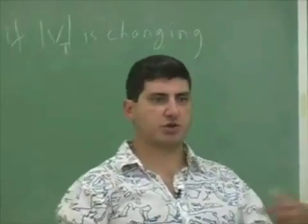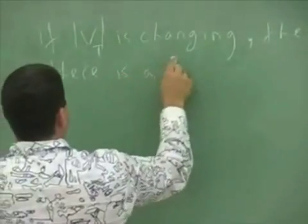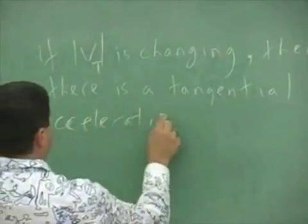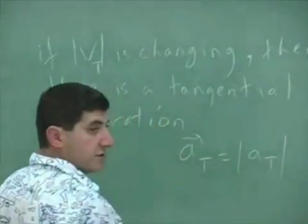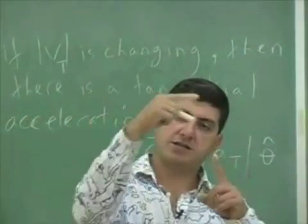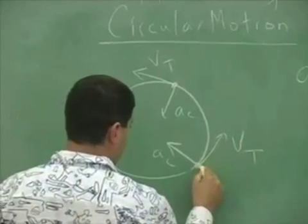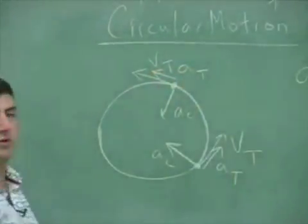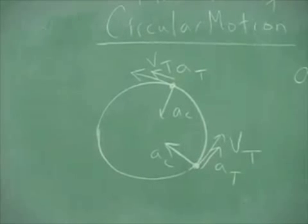Besides the centripetal acceleration, there's also a tangential acceleration. The formula for tangential acceleration is a_t equal to the magnitude of a_t times theta-hat. In polar coordinates, theta-hat is a unit vector going along the circle, so the tangential acceleration goes along with the object's motion.